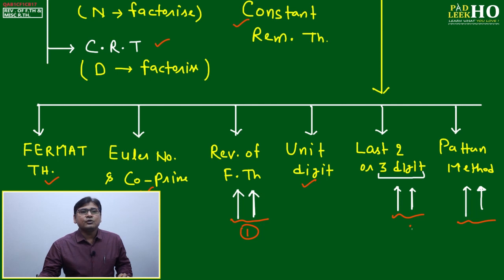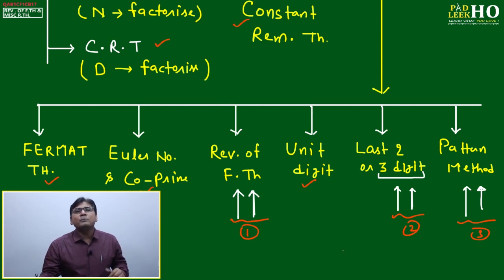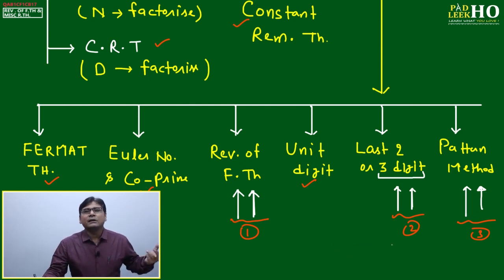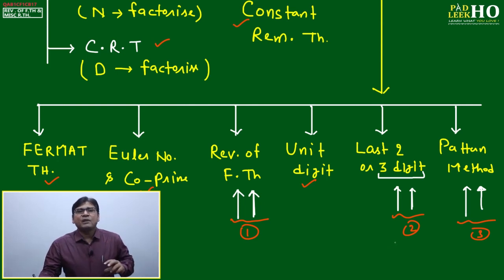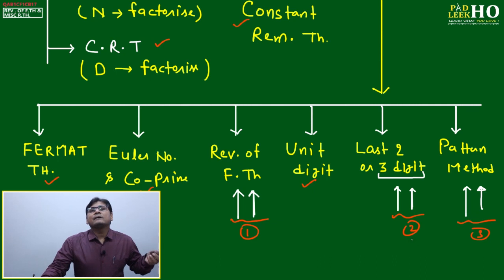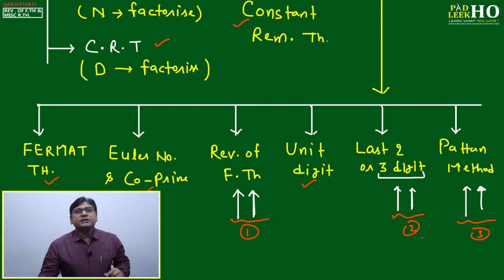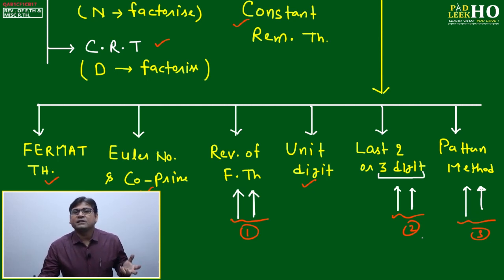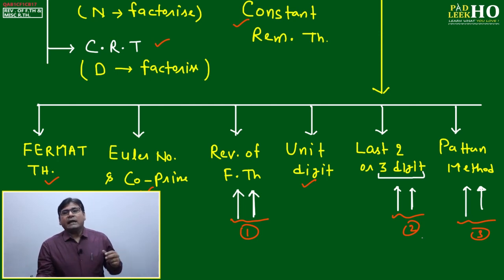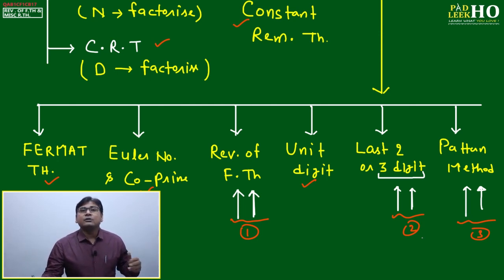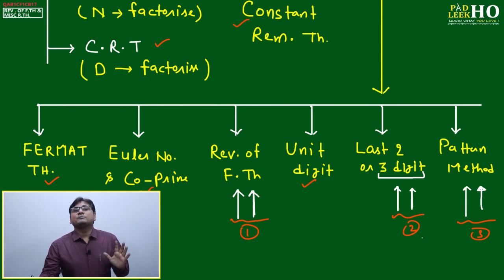Point one is the Reverse of Fermat's Theorem. Point two is last three digits — finding three or more digits requires binomial expansion; there's no shortcut technique like there is for unit digit or last two digits. Point three is the pattern method. For last three digits specifically, only the binomial expansion method works.